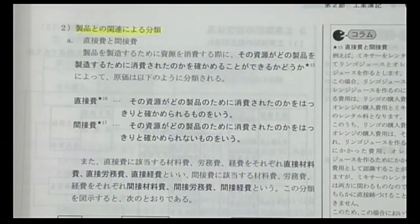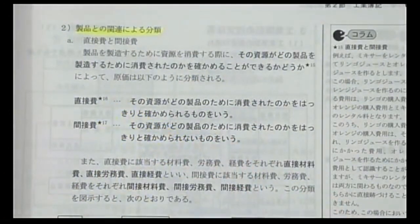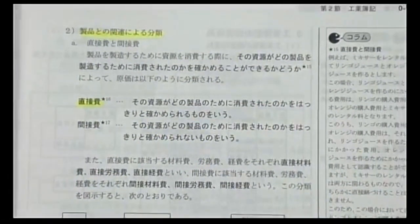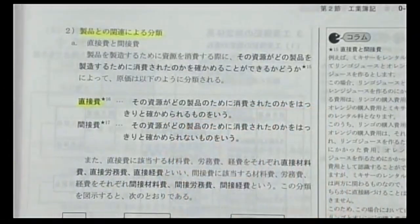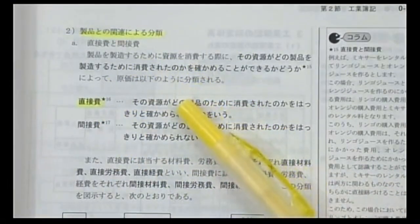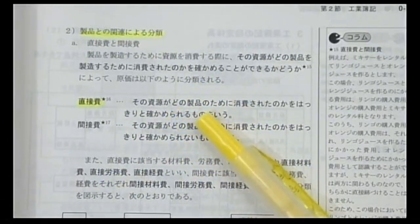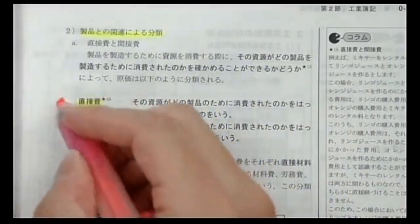製品との関連による原価の分類では、直接費と間接費に分けます。直接費とは、その資源（材料や労働力）がどの製品のために費やされたかをはっきりと確かめられるものです。間接費とはどの製品に費やされたかわからないものです。